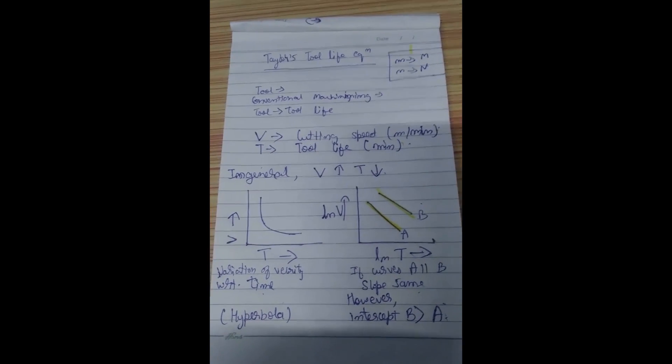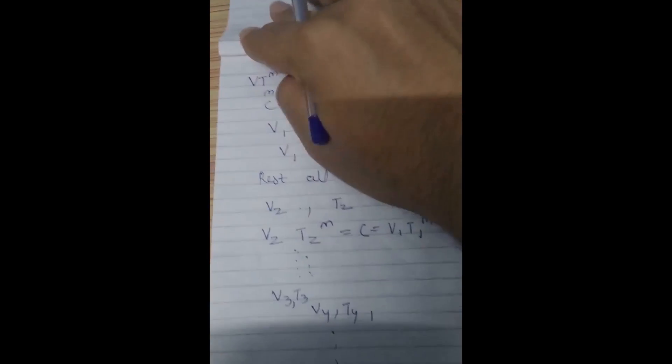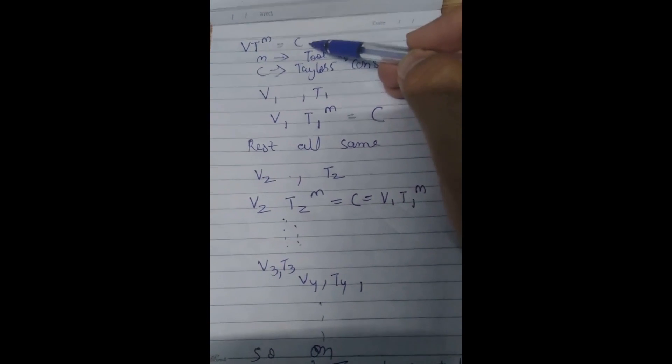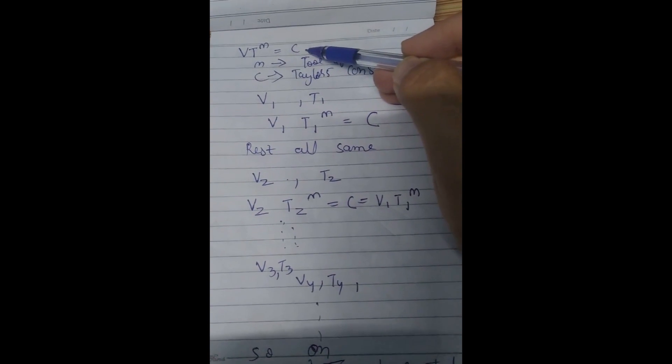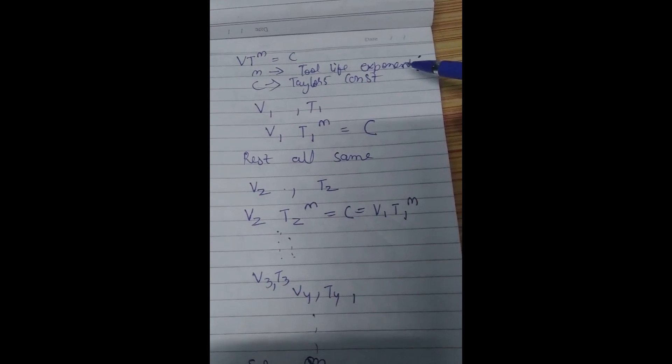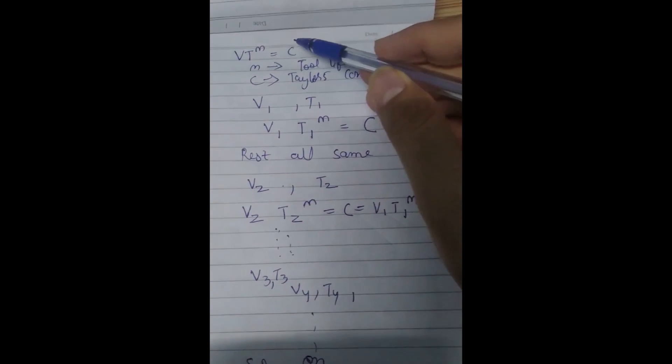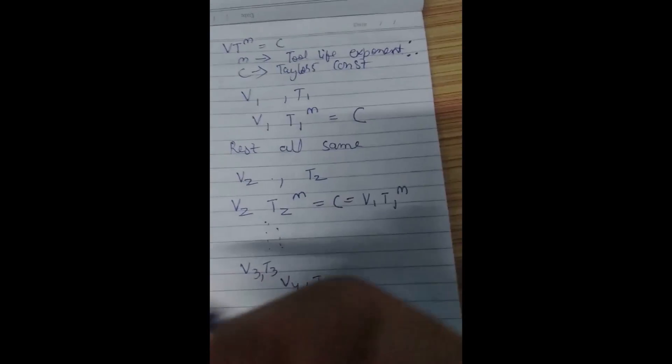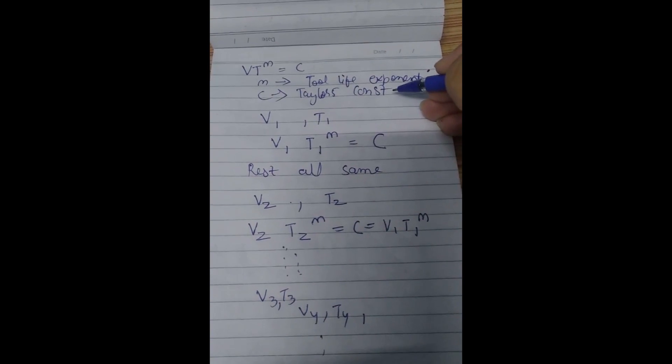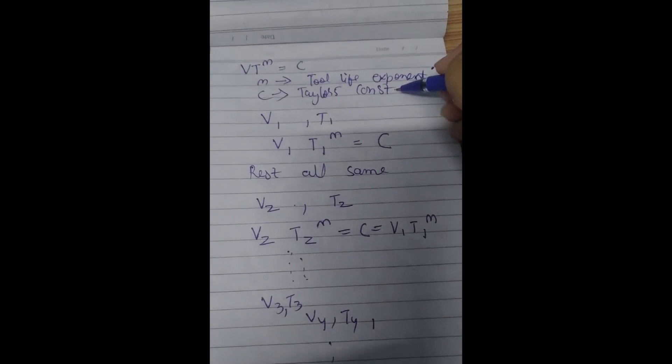So basically from here we can say that the equation says that VT raised to power n equal to C. Here n stands for the tool life exponent. n stands for the tool life exponent and C the constant is the Taylor's constant.